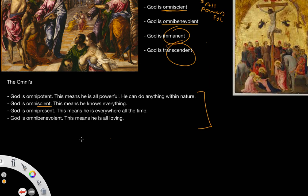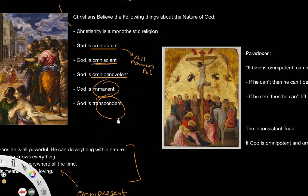There's also one that isn't here, which is omnipresent, which ties in with God being immanent. Omnipresent. This is a very easy one to remember because present meaning with us. So he is everywhere all the time.